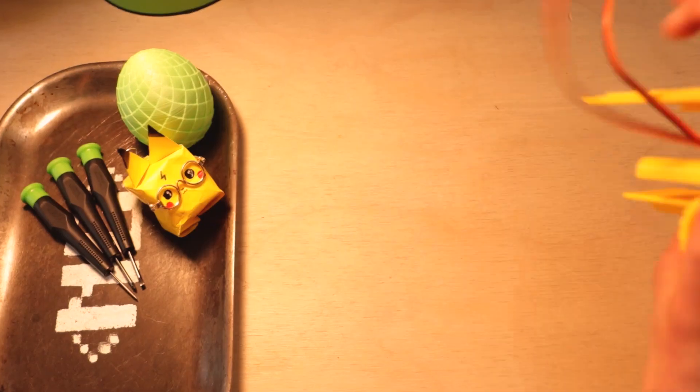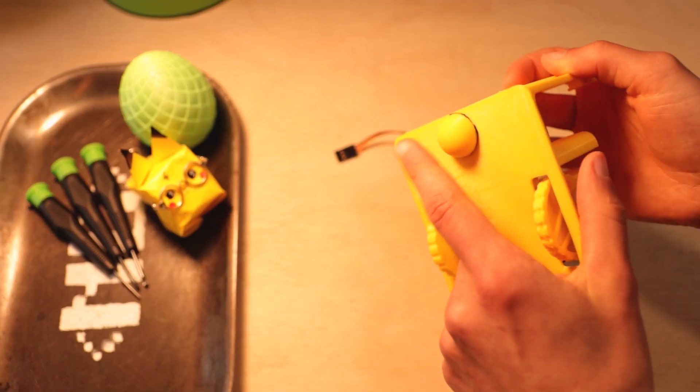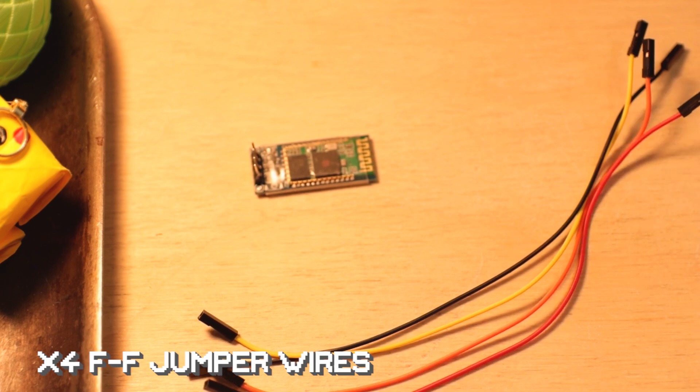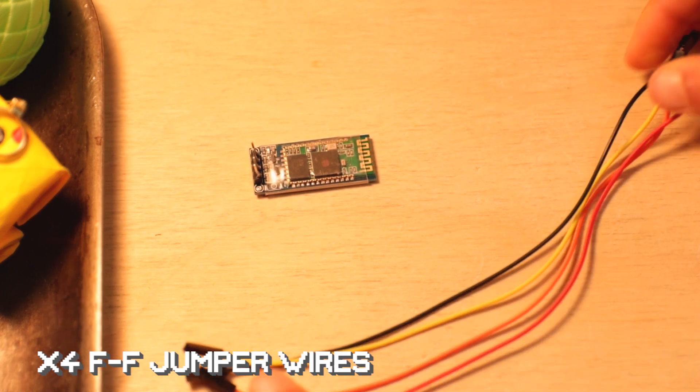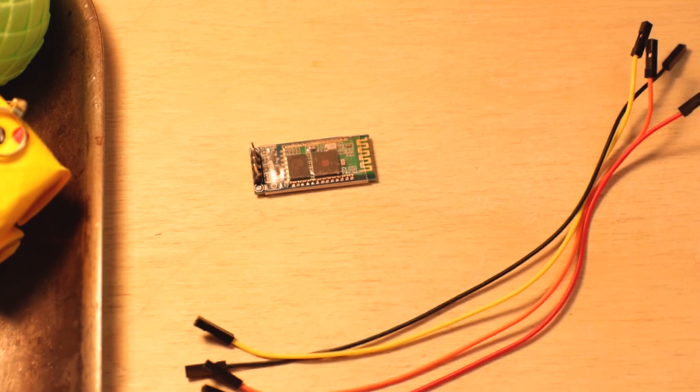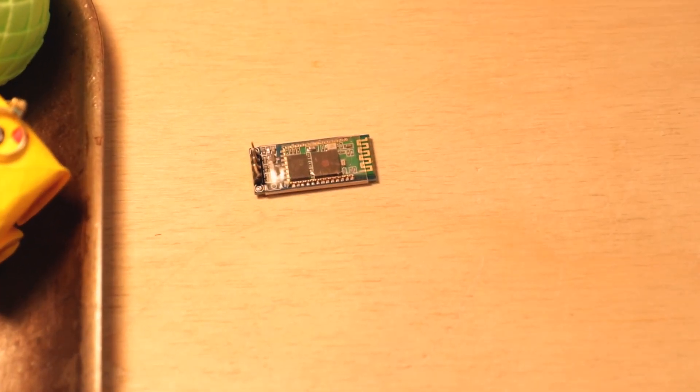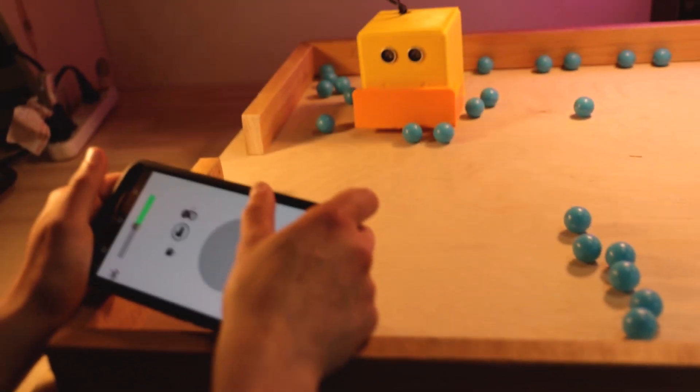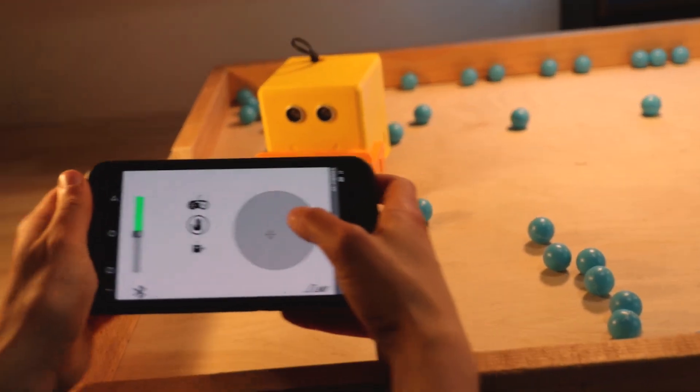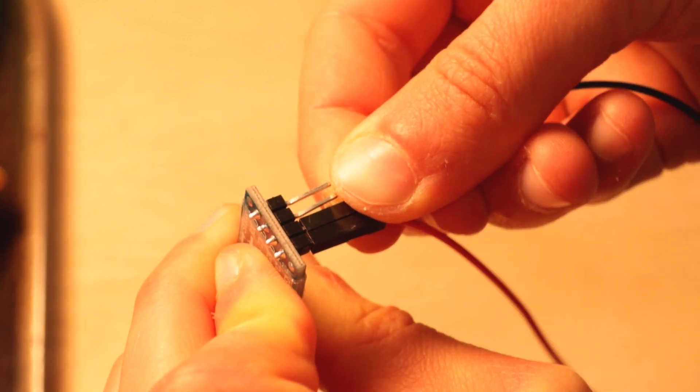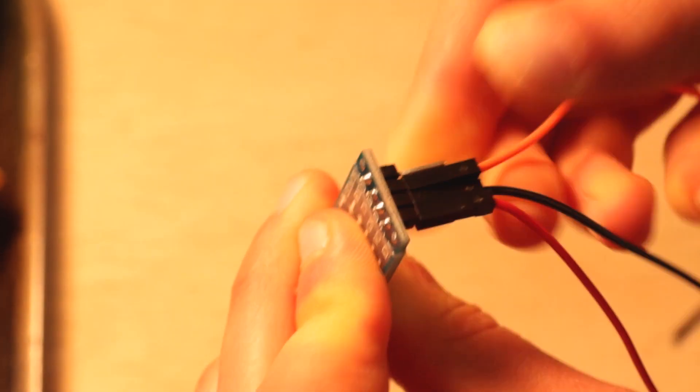Step three: make sure Little Bot's swivel is attached to the bottom of its base. Step four: grab one Bluetooth module and four female to female jumper wires. I'm using colors red, orange, yellow, and black. This little guy is a Bluetooth module and can send signals and info bluetoothly so that we can control Little Bot via an app on a mobile phone.